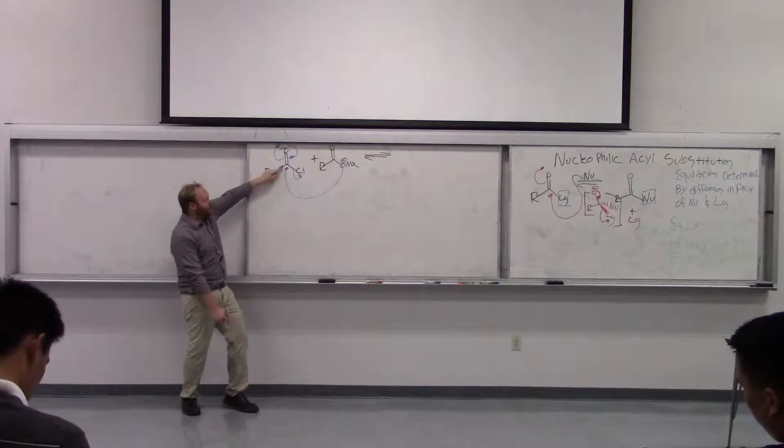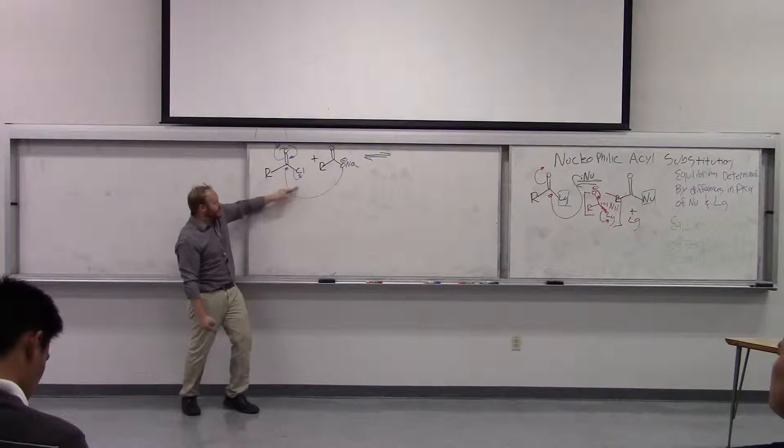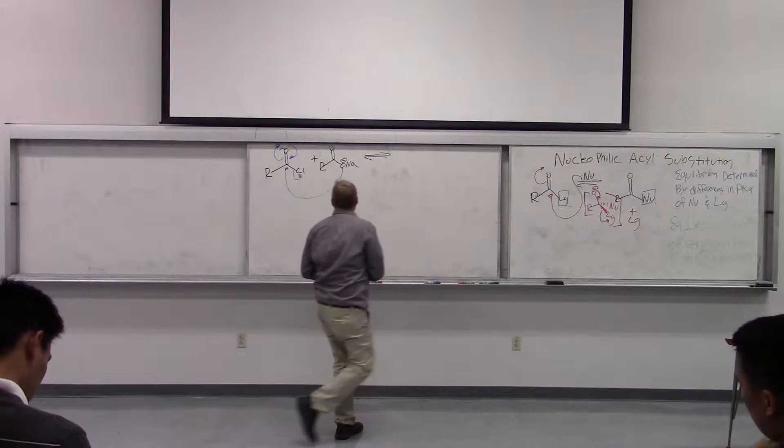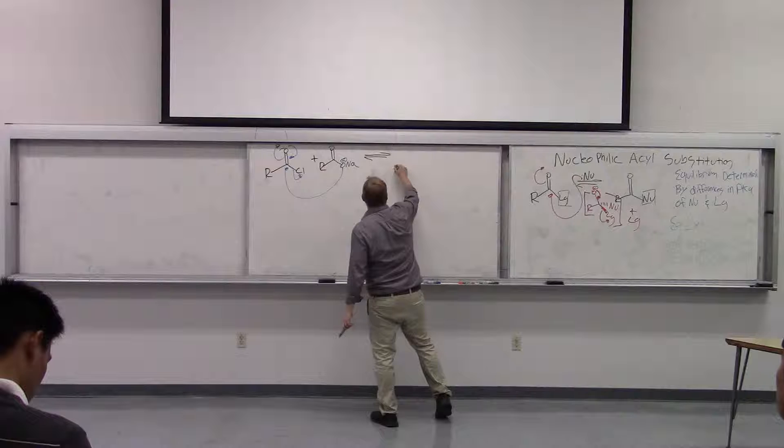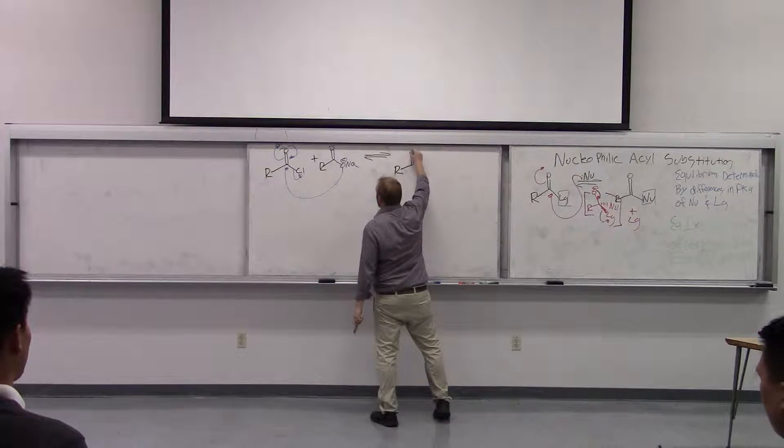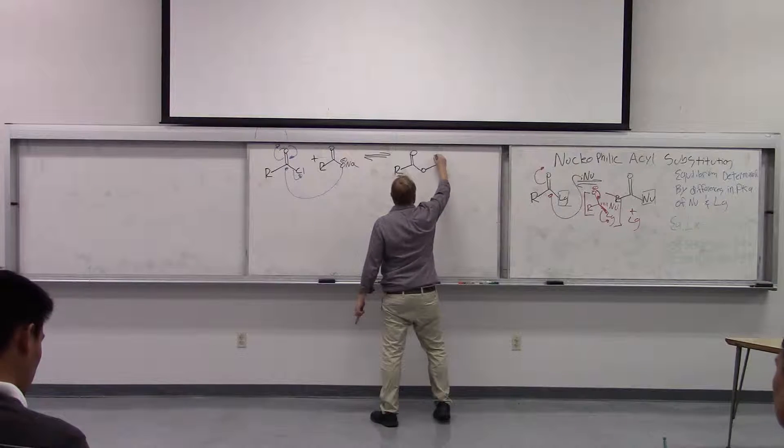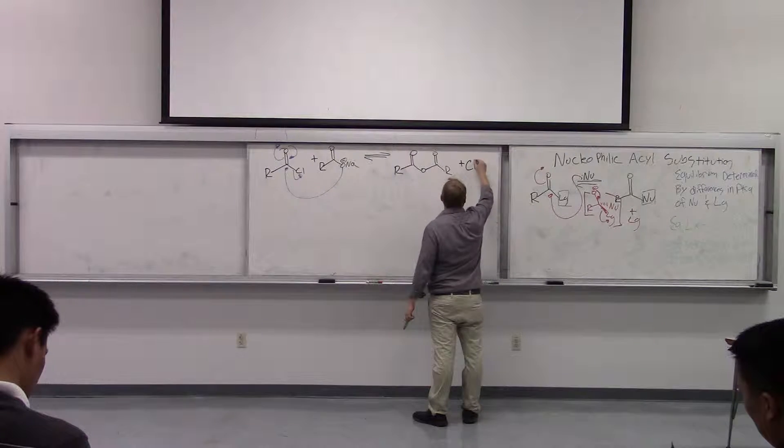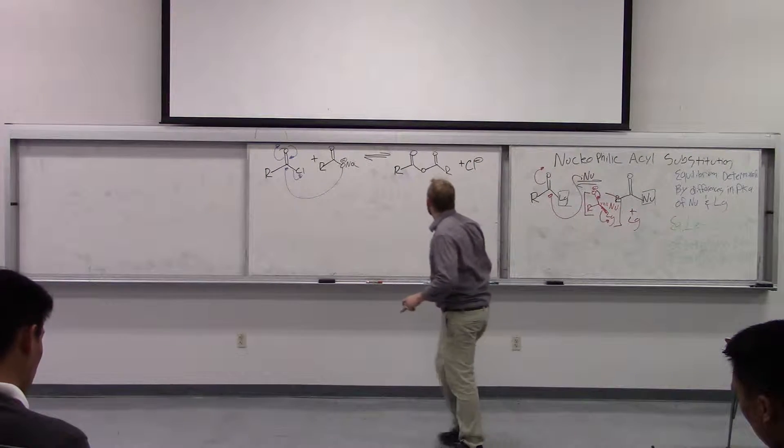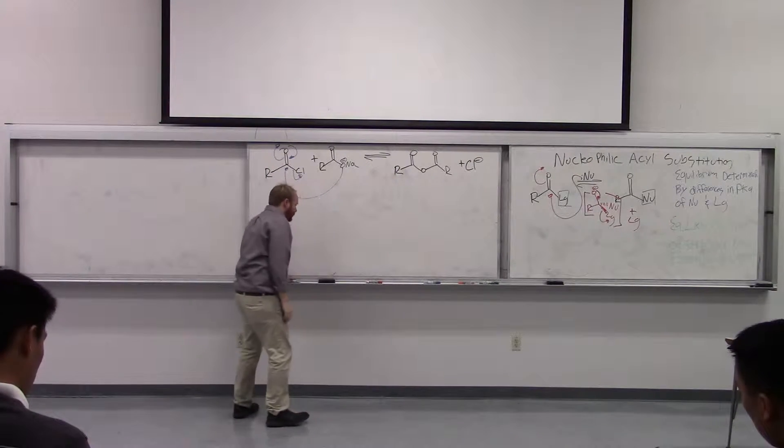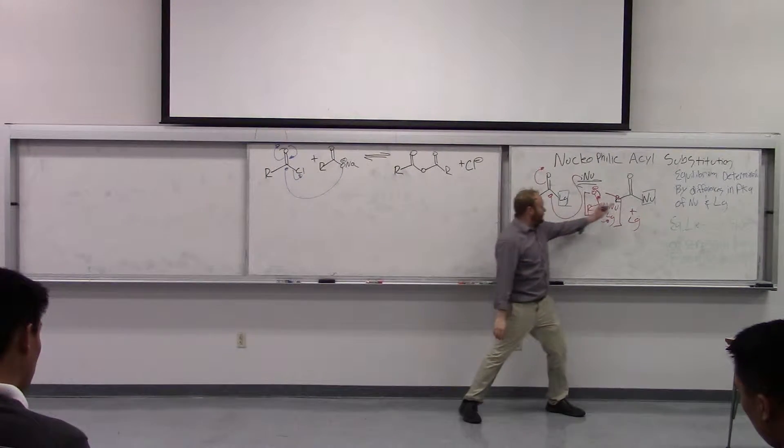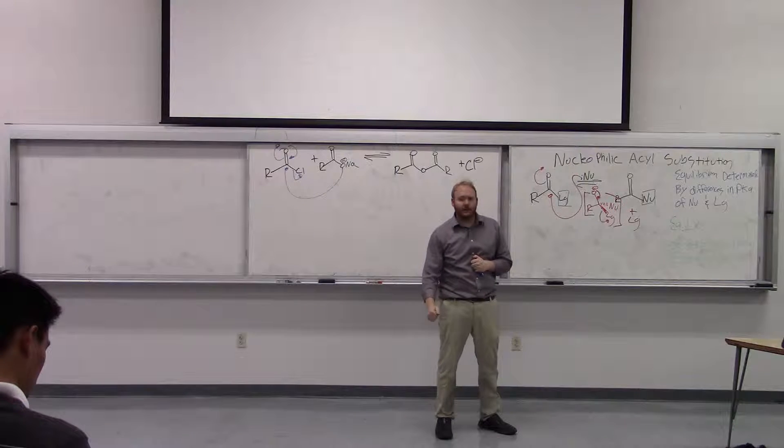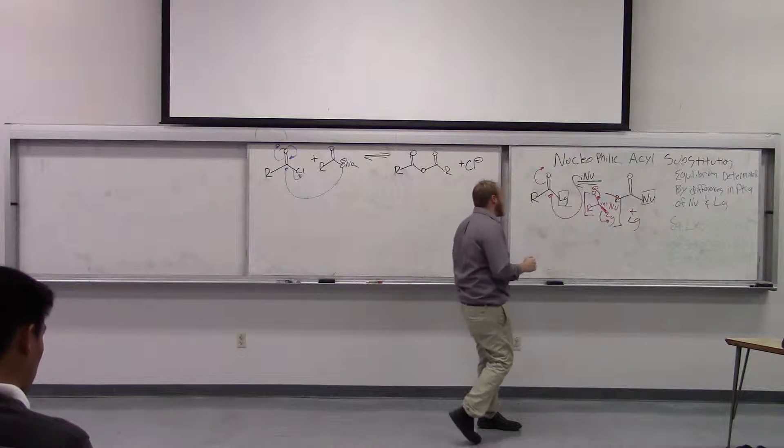Chemists normally don't draw the tetrahedral intermediate because it's so common and mundane, and it's another intermediate that takes more time to draw. Chemists would normally just draw a nucleophile adding, one arrow for the electrons kicking up to give the tetrahedral intermediate, a second arrow for the tetrahedral intermediate collapsing, kicking out the leaving group. So this really is the entire mechanism of a nucleophilic acyl substitution.